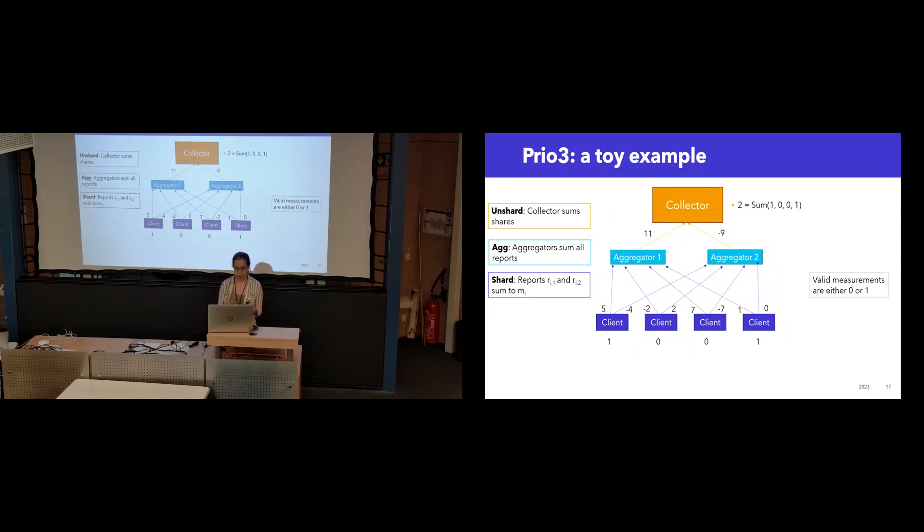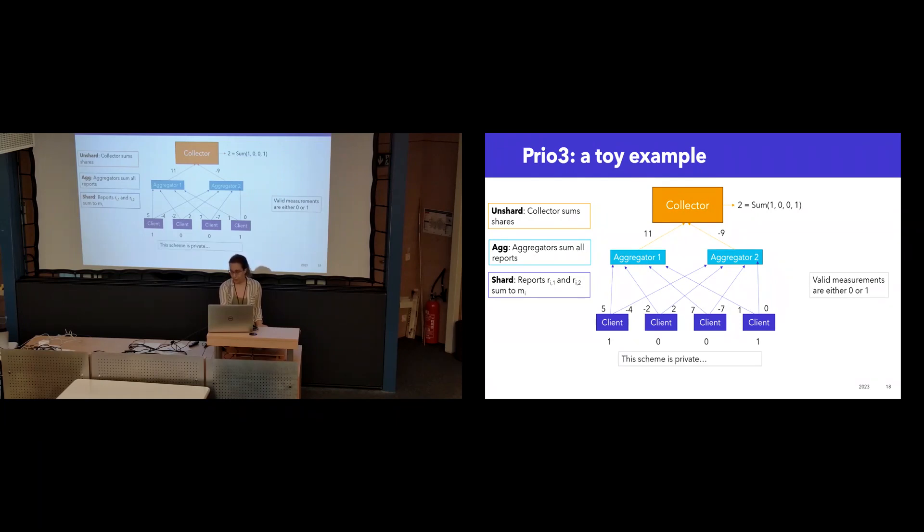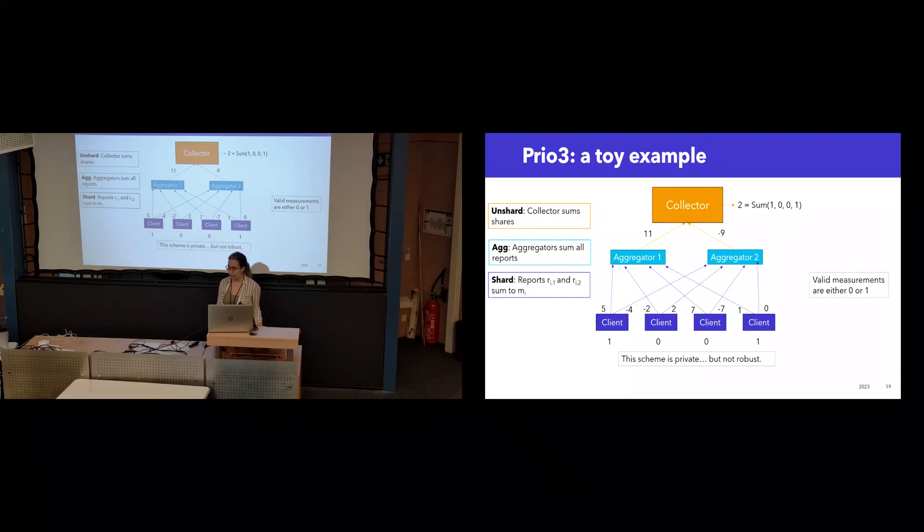We can use linear secret sharing to split these measurements up between aggregators, and then when the aggregators sum all of their individual reports, they learn nothing about individual measurements, but the collector can sum the two sums and obtain the final sum. So this satisfies privacy perfectly, but it doesn't satisfy robustness because a client could theoretically submit shares of a million rather than one or zero, and the individual aggregators have no way to tell.